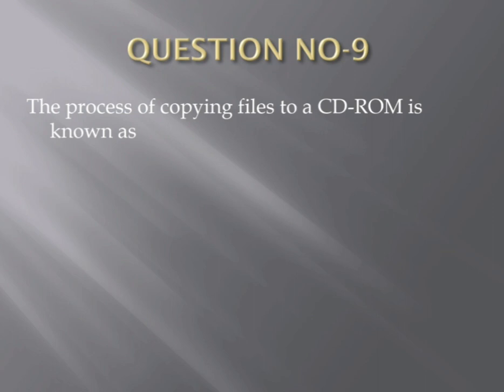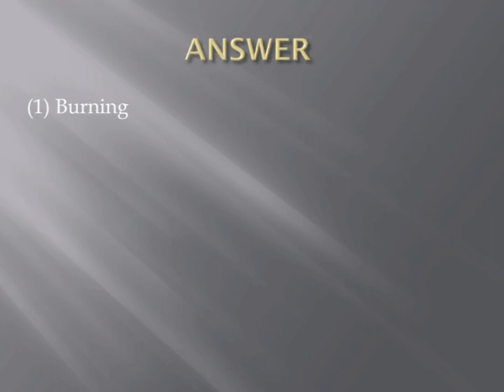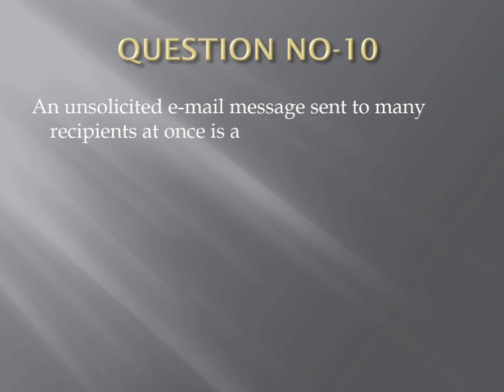Question number nine. The process of copying files to a CD-ROM is known as — Options: (1) Burning, (2) Zipping, (3) Digitizing, (4) Ripping. The correct answer is the first one — Burning.